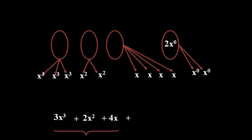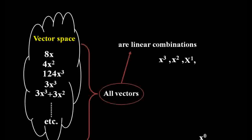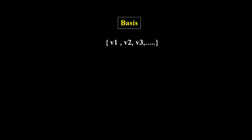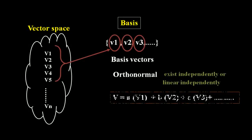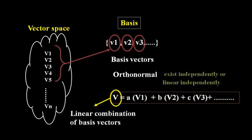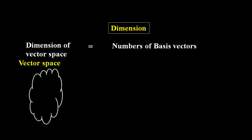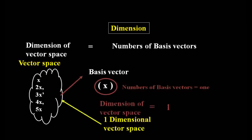The vector space of polynomials contains all vectors that are linear combinations of x cubed, x squared, x, and x naught. Those that are different and therefore linearly independent and orthonormal are called basis vectors. The basis is a set of vectors in a vector space whose elements are orthonormal and exist independently. Arbitrary vectors in this space can be written as linear combinations of basis vectors, where a, b, c are scalars or components. The dimension of a vector space equals the number of basis vectors. If the basis vector is just x, it is a one-dimensional space.